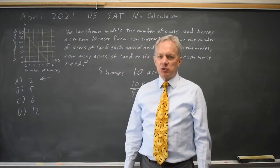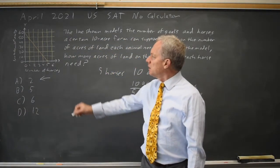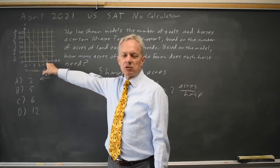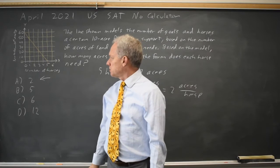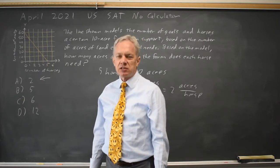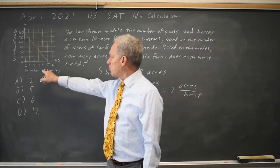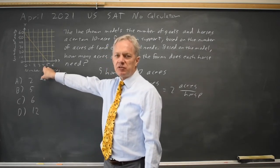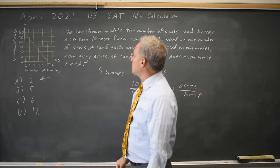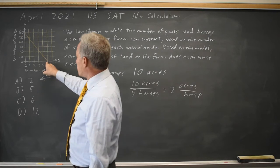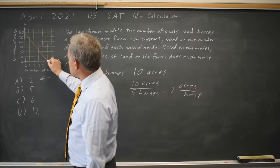A couple times each year, College Board will ask a question like this where they give you a graph or scatter plot for two quantities, such as in this case goats and horses, or perhaps two different kinds of flowers, and ask you about if you only have one of those two. In this case, if you only have horses, you can support 5 horses with 0 goats at this point here.